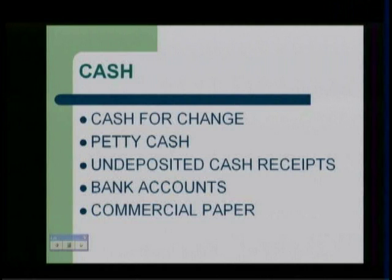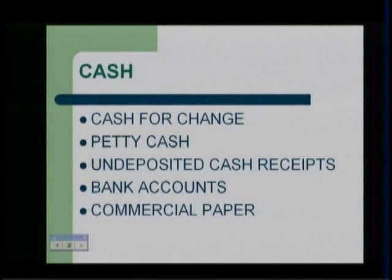Another piece of cash found in most companies is undeposited cash receipts — monies received in the mail through checks for people who paid their bills, or customers who came in and wrote checks on hand but haven't been deposited. Those are cash receipts not yet deposited into the bank, but still cash available to the company. Additionally, they have their bank account, where most companies keep a majority of their cash — at least one checking account and probably some sort of deposit account or CD for short-term investments. All bank accounts need to be reconciled and entered in the cash account.